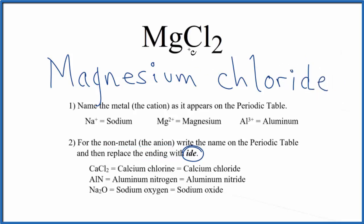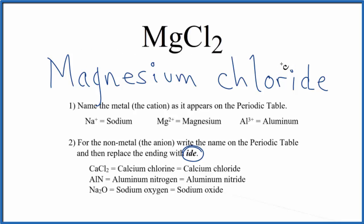So the name for MgCl2 is magnesium chloride. If you were given the name and asked the formula, you'd have to realize that magnesium is in group 2 on the periodic table — it forms 2+ ions when it bonds. Chlorine forms 1−, so 2 times 1− gives 2−, which balances out the 2+. The formula is MgCl2.